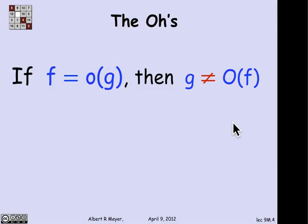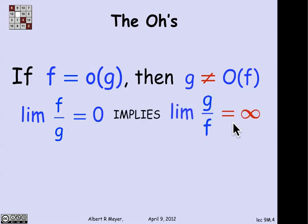Another such property is that if f is much less than g, then g is not roughly less than f. More precisely, if f is little o of g, then g is not big O of f. The left-hand side says that the limit of f over g is 0, but that implies that the limit of g over f is 1 over 0 or infinity, which means it's not finite. So g is not big O of f.